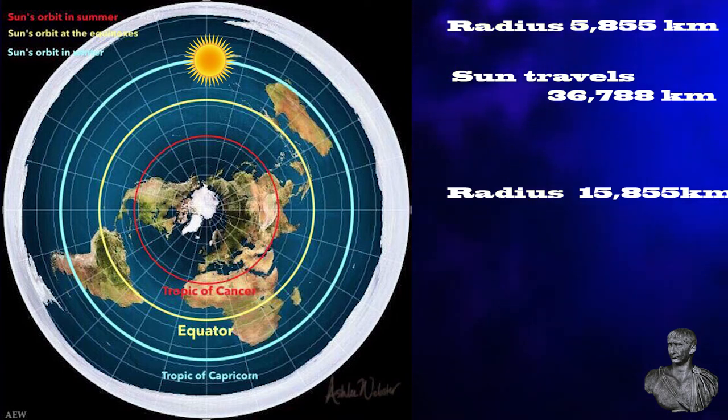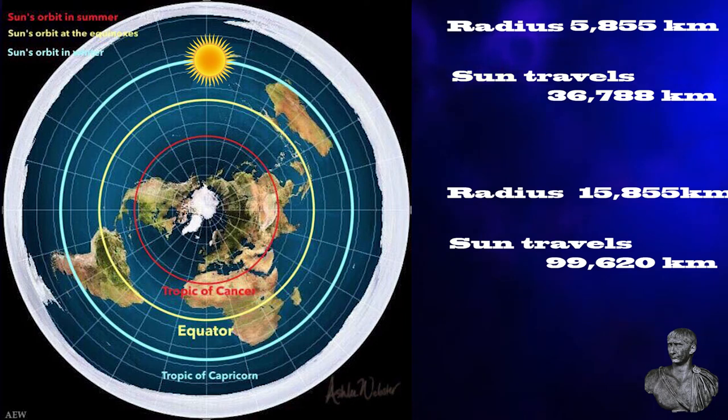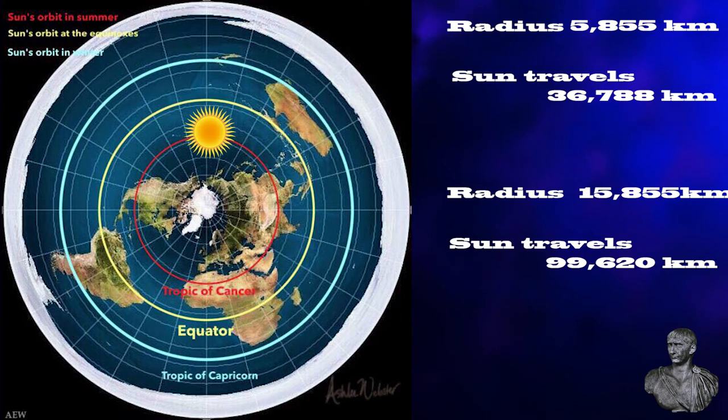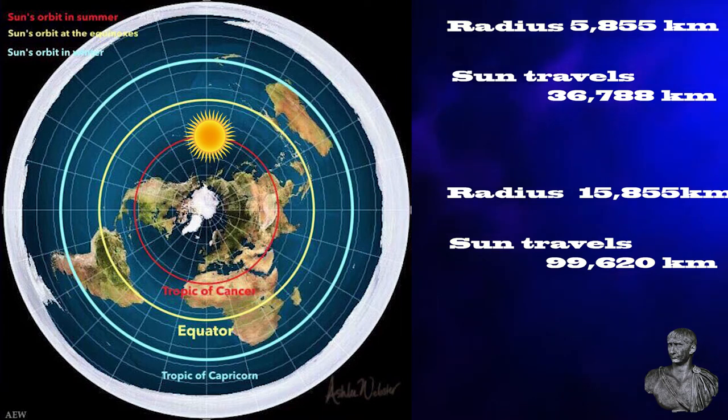After which, using the formula for circumference again, we get the distance of 99,622 kilometers the sun has to travel on a flat earth. And then back again. And all this in a year. Please tell me what force is responsible for the changes in the sun's orbit.